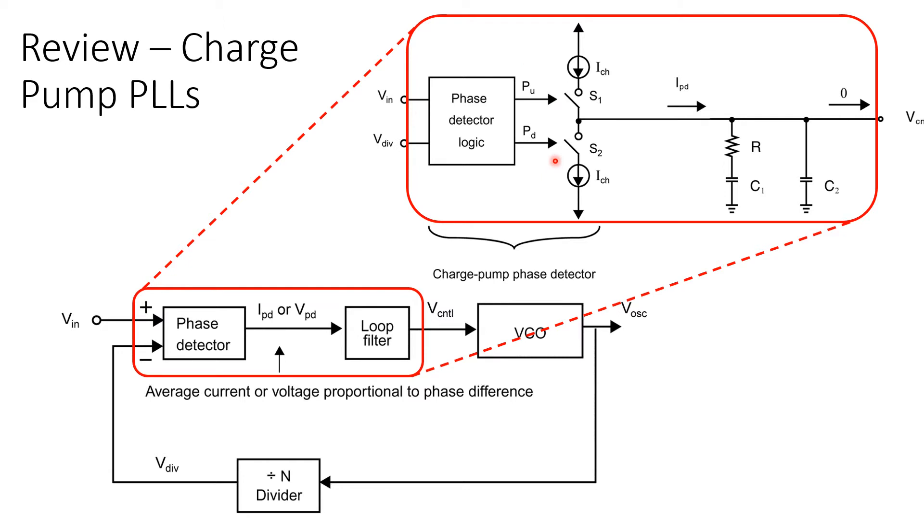So since the pull-up and pull-down signals are only active for a narrow window of time, you can think of these switched current sources as depositing quantities of charge onto the loop filter or taking quantities of charge off of the loop filter, hence the name charge pump.